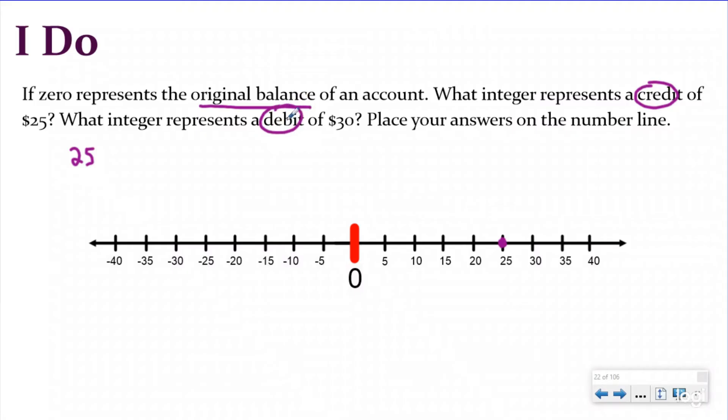What integer represents a debit of 30? So now I want to go into my bank account and I want to take away $30 from it. And so of course that would be a negative 30 because you're going to be taking away money from it. And so it'd be five, 10, 15, 20, 25, 30. And I would place negative 30 on that number line.